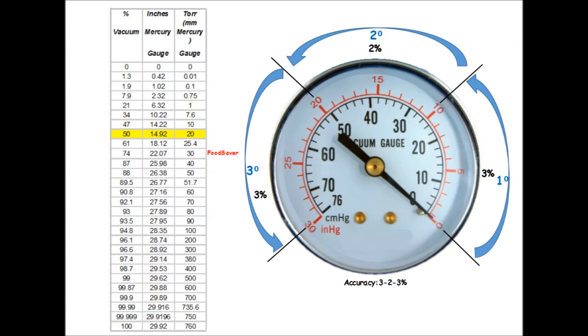In this chart, the values in inches of mercury versus the percentage volume of air removed are given. Also shown is the percentage of accuracy for the vacuum gauge.